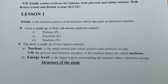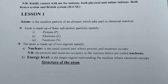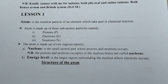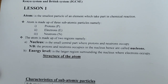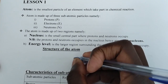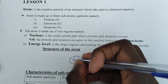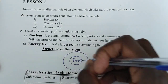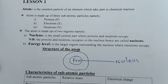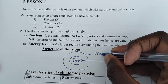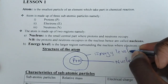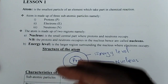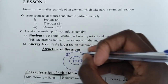To summarize: an atom is the smallest particle of an element which takes part in a chemical reaction. The atom is made up of three subatomic particles — proton, electron, and neutron — and two regions: the nucleus and the energy level. In the nucleus, protons and neutrons occupy the small central part, while electrons occupy the energy level, the region surrounding the nucleus.